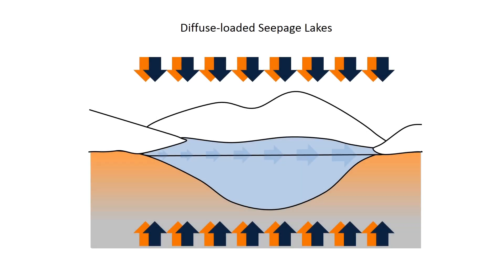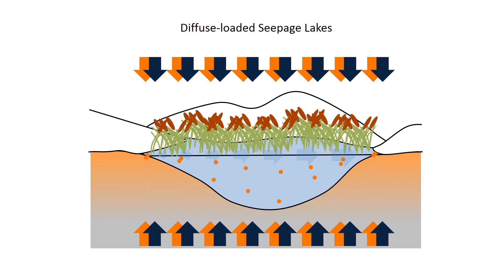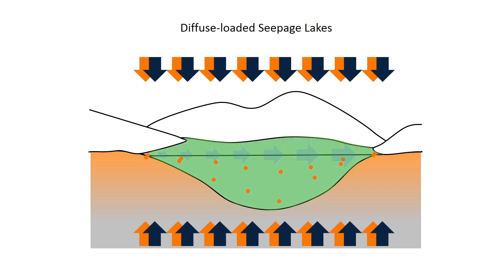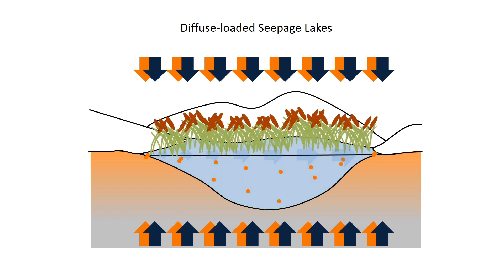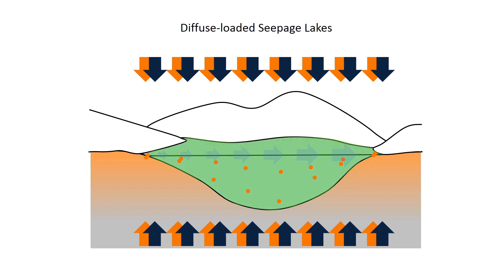In seepage lakes with a diffuse nutrient source, both the water and the nutrient inputs are completely homogeneous. Consequently, the distribution of nutrients and organisms is homogeneous as well. This homogeneity allows for alternative stable states, which complicates clear water restoration.